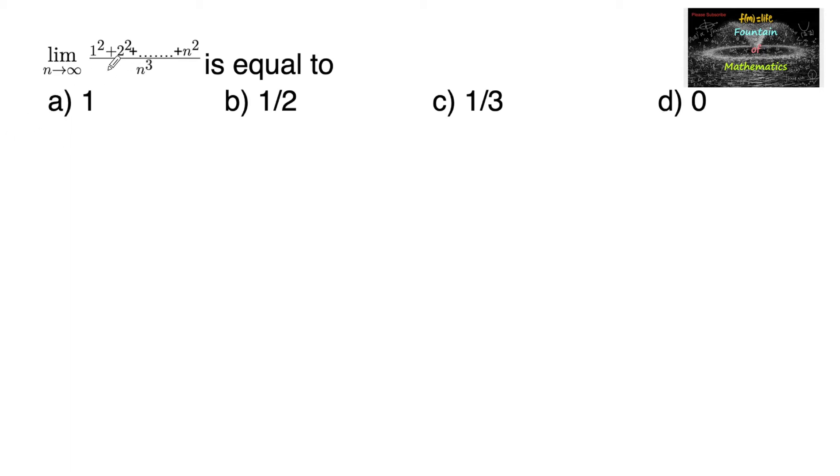Limit n tends to infinity 1 square plus 2 square and so on to n square upon n power 3. In the numerator we have sum of squares of first n natural numbers and since we know that sum of squares, that is sigma n square 1 square plus 2 square and so on up to n square, is equal to n into n plus 1 into 2n plus 1 upon 6.